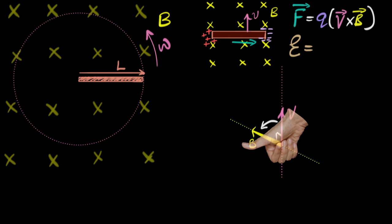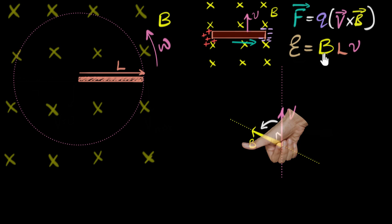In the previous video, we derived the expression for that induced potential difference — we called it the Motional EMF, but it's the same thing as the potential difference due to charge separation. We derived it to be the product of B times L, the length of the rod, times V, where V is the speed of the rod. This simple expression only works when the velocity is perpendicular to the magnetic field. Feel free to go back and check out our videos on Motional EMF for clarity.